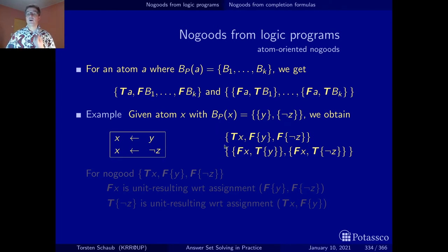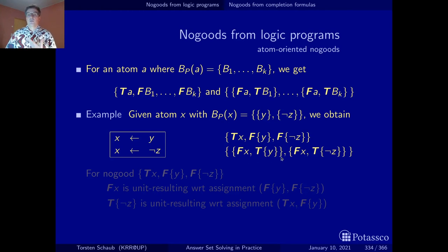Accordingly we get these three no-goods. The first one says it cannot be the case that x is true but both bodies have been found to be false. The second says it cannot be the case that x is false but the body of the first rule has been found to be true. The third says it cannot be the case that x is false but the second rule could apply because its body has been found to be true.